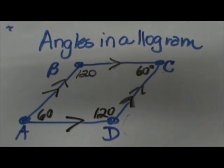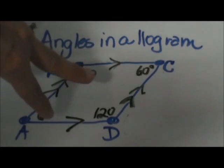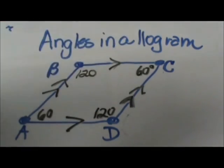Any pair of consecutive angles are supplementary. These two are supplementary, these two are supplementary, these two are supplementary, and these two are supplementary. The opposite angles are congruent.